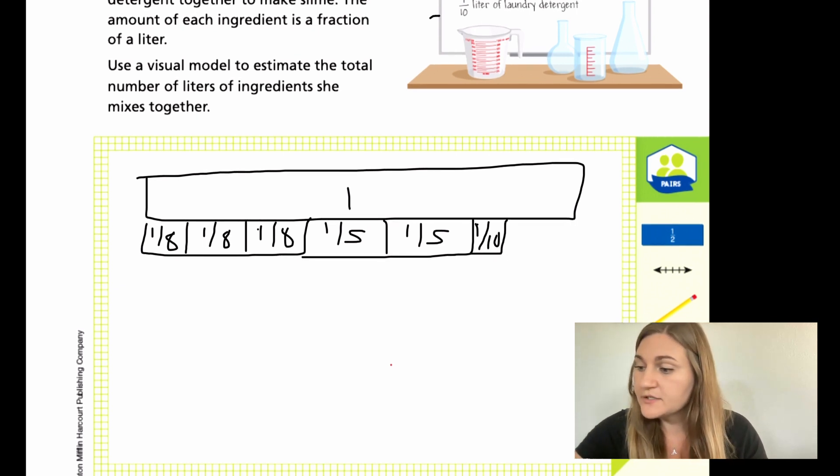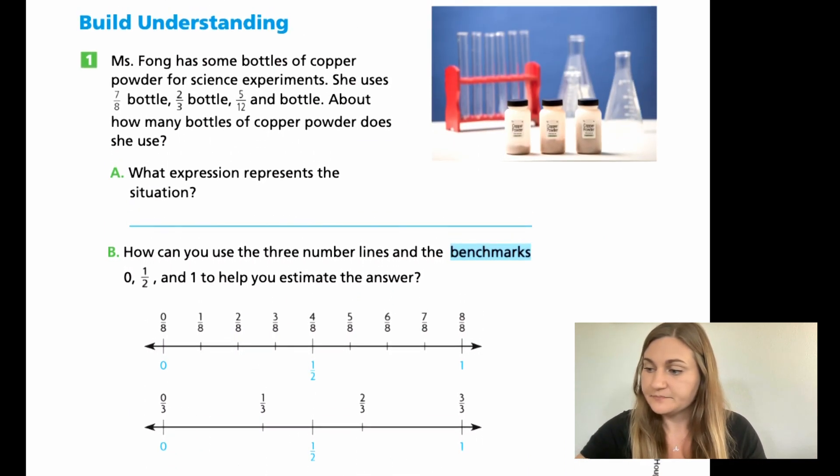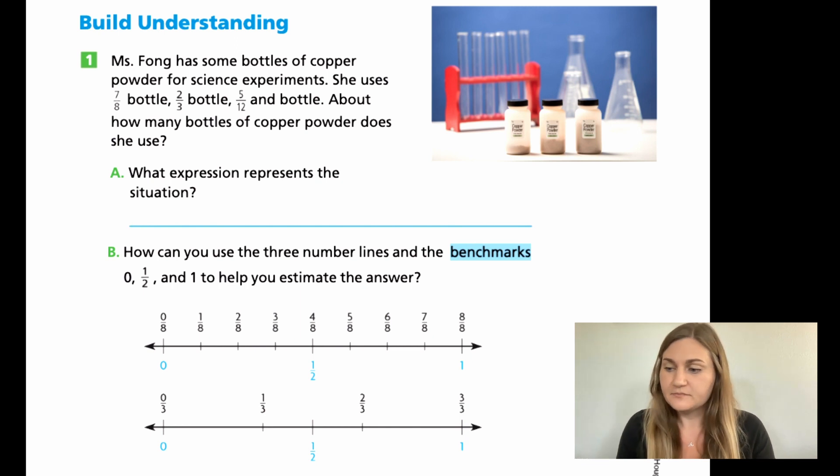Now we're going to flip the page to page 150. It starts with a word problem that says Mrs. Fong has some bottles of copper powder for science experiments. She uses 7/8 bottle, 2/3 bottle, and 5/12 of a bottle. About how many bottles of copper powder does she use? I'm going to circle those fractions so they stand out: my 7/8, my 2/3, and my 5/12. I know that I'm adding them all together.